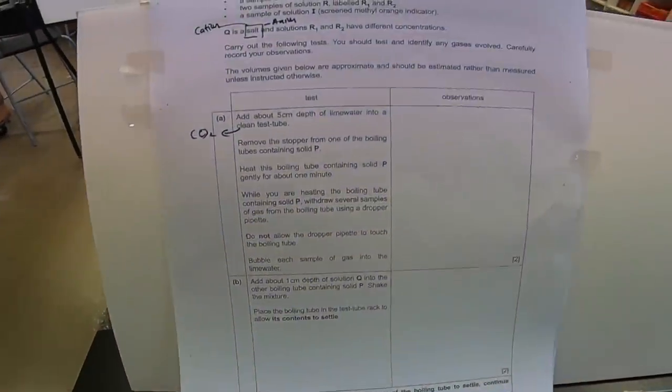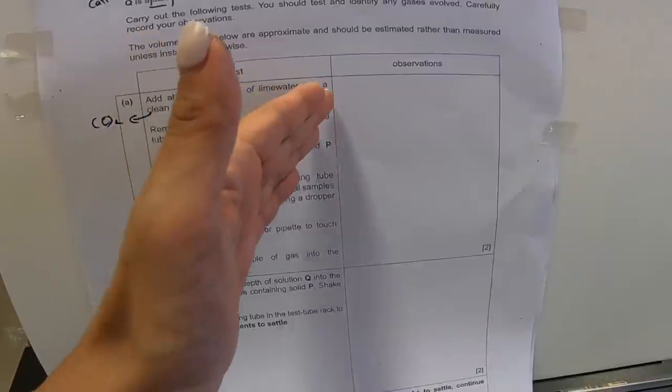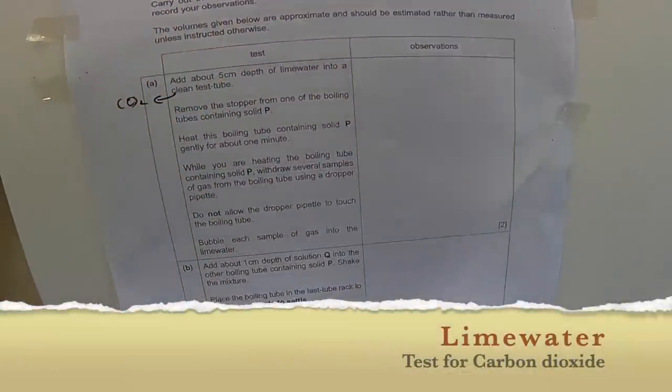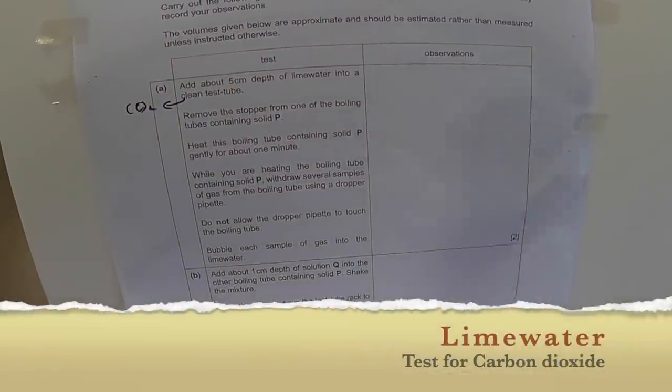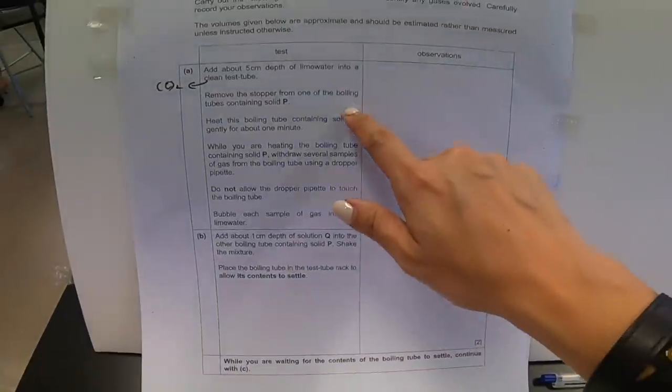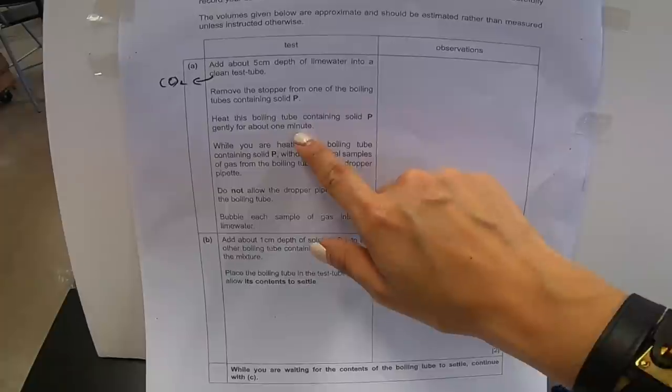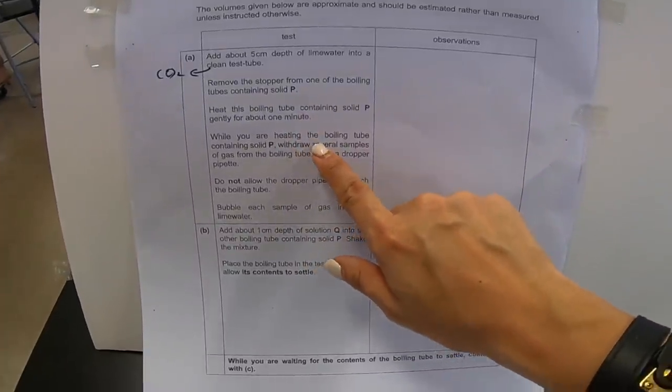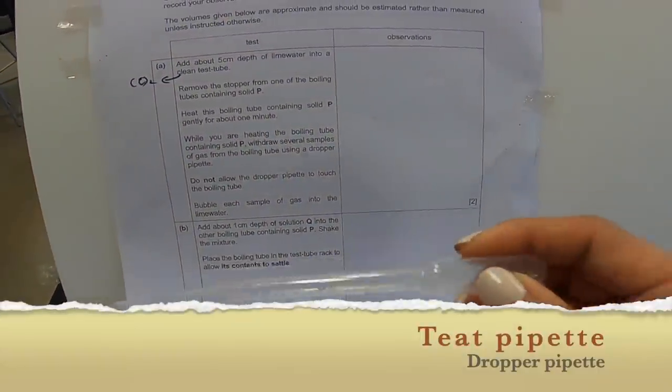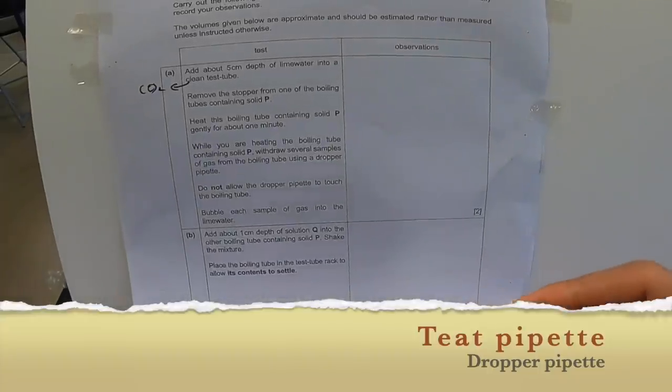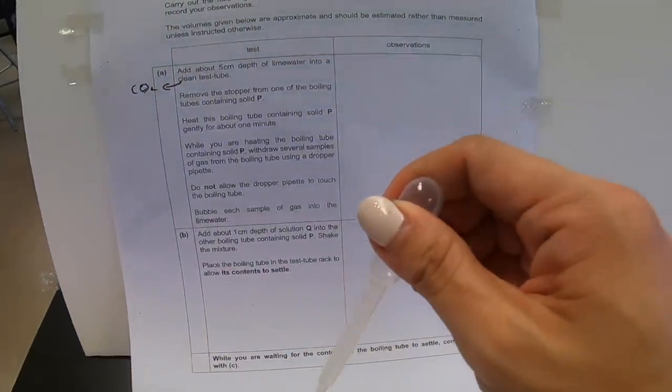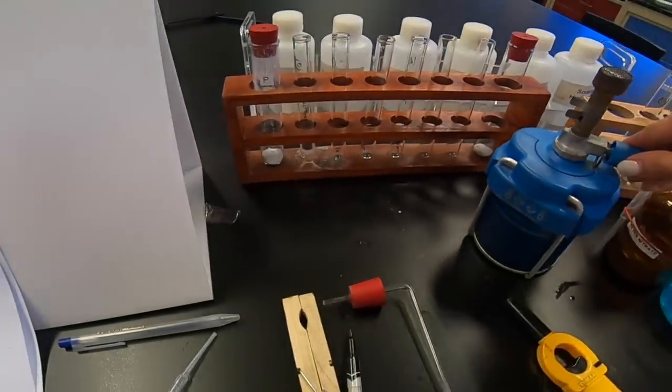Let's begin the execution. First part says that add about 5 cm depth of lime water into a clean test tube. We have already done that in the previous part. Second, they say remove the stopper from one of the boiling tube containing P. We're supposed to heat this boiling tube for about a minute. Let's begin.